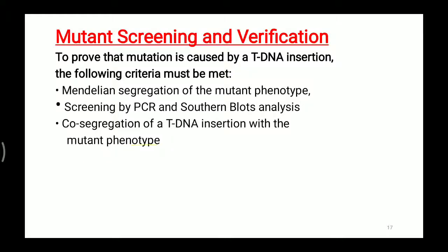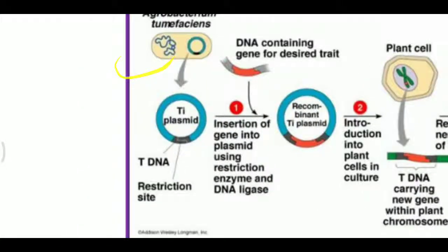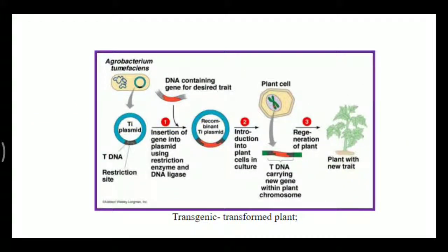Now we are going to study the procedure for tDNA insertion. First, we extract the Agrobacterium tumor-inducing plasmid, which contains the tDNA and restriction sites. We insert the DNA content with the desired trait into the Ti plasmid vector. Insertion of the gene into the plasmid is done using restriction enzymes and DNA ligase — the restriction enzyme cuts the tDNA, the required gene of interest is inserted, and then DNA ligase seals the cut regions.